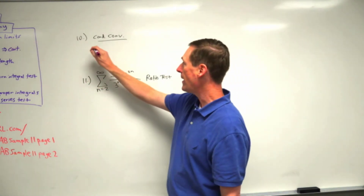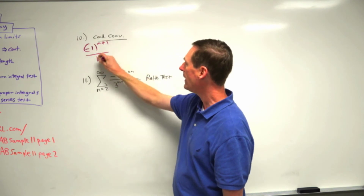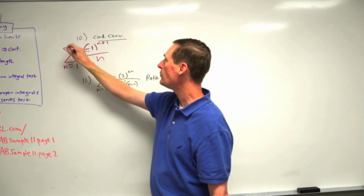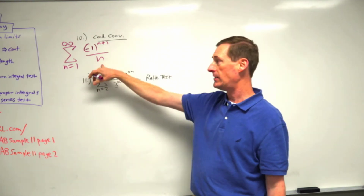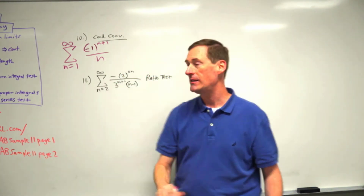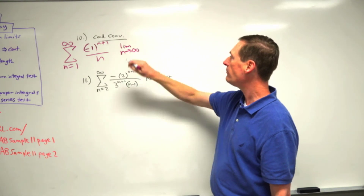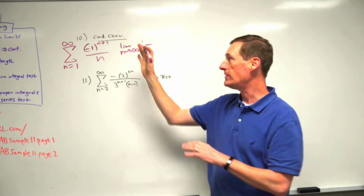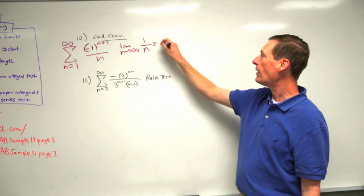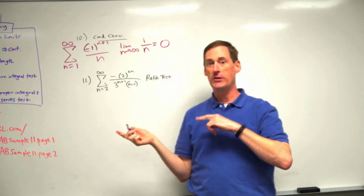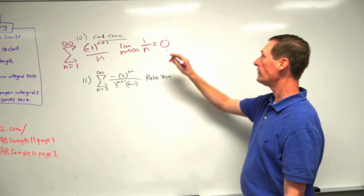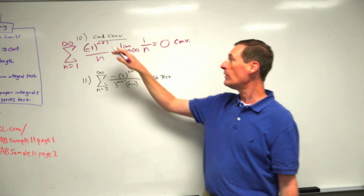Here's the classic example: negative one to the n plus one over n, with an oscillator and n to the first on the bottom, running from n equals one to infinity. You can't run it from n equals zero because it wouldn't exist. If you run the alternating series test, you take the limit as n approaches infinity of the part without the oscillator — that's b sub n — and it equals zero. In the alternating series test, if the non-alternating part gives you zero, it is conclusively convergent.